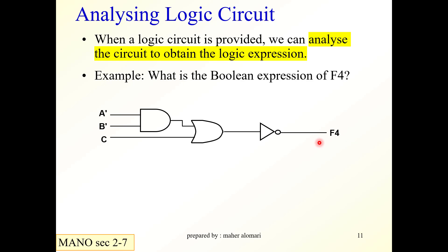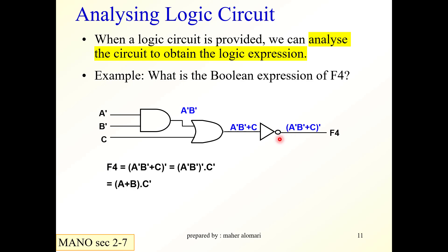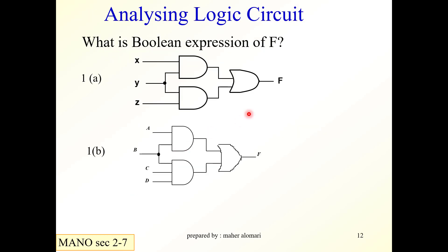Given this circuit, how do we analyze it to find the output? We start from the input side. The output of the AND gate is A bar · B bar. The output of the NOR gate is (A bar · B bar OR C) complemented, which equals (A bar · B bar) complemented AND C bar, which simplifies to (A OR B) AND C bar.